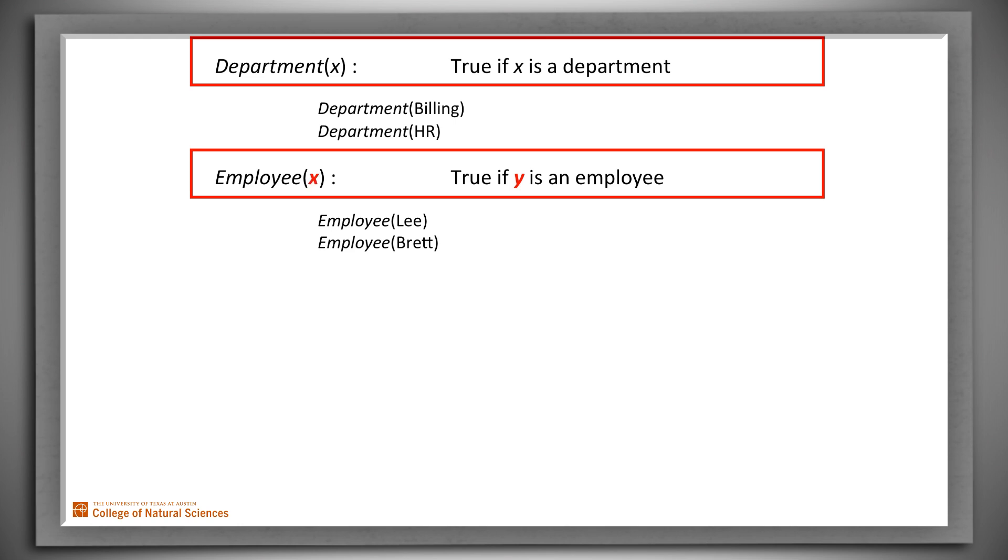Suppose that instead we tried to define Employee like this. We've used X in one place and Y in another. That's nonsense. We haven't said anything about the circumstances under which some value X is an employee. What we've said is something about some Y. But where would Y come from? It's not mentioned in Employee of X. Now let's go back to defining Employee correctly.